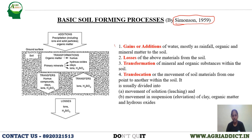Those four basic processes are: gains or additions, losses, transformations, and translocations. In additions, what is added into the soil? Mostly precipitation — that is water as rainfall or irrigation.